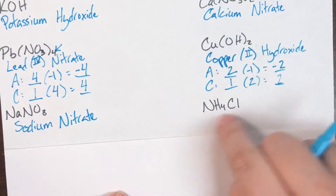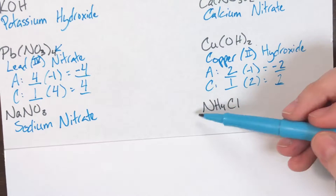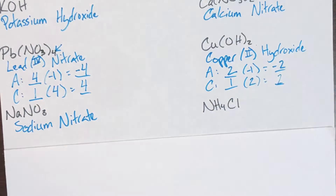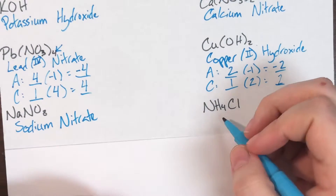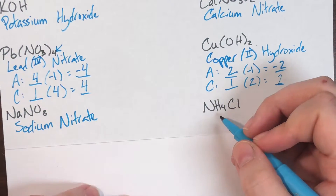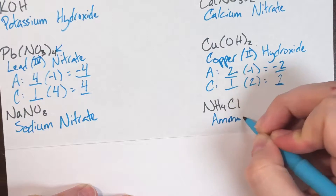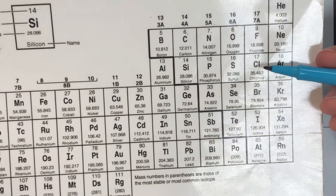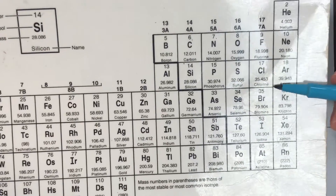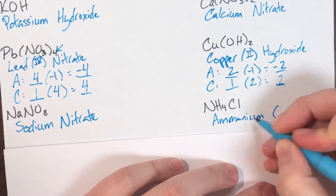NH₄Cl: NH₄ is the special positive polyatomic ion, ammonium, and it comes first even though it is made up of non-metals only — it functions as the cation. Cl from the periodic table is chlorine, and chlorine's anion name is chloride. So the compound name is ammonium chloride.